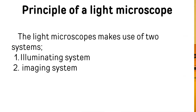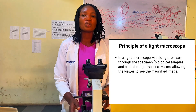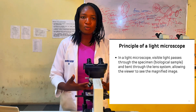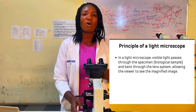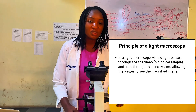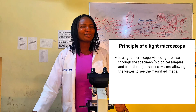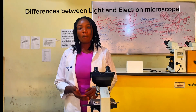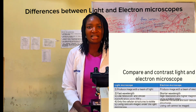Let's look at the principle of the light microscope. The light microscope makes use of two systems: the illuminating system and the imaging system. The light microscope makes use of a beam of light to magnify the specimen or tissue under focus and produces an image, which means that the light microscope cannot work without light.